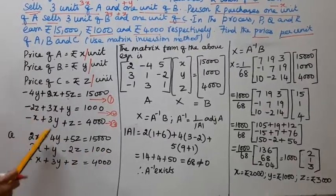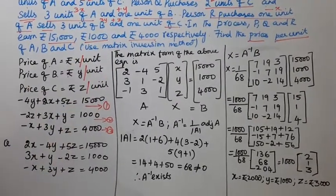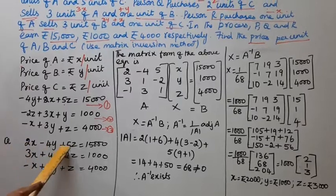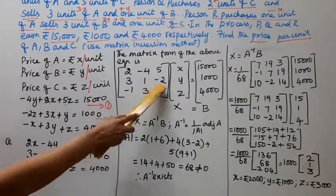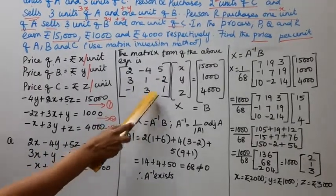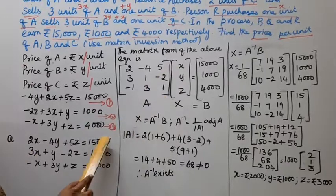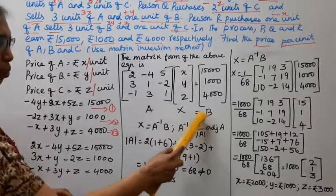The matrix form of the above equation. 2 minus 4, 5. 3, 1 minus 2. Minus 1, 3, 1. X, Y, Z. Right hand side of 15,000, 1000, 4000. AX equal to B. X equal to A inverse of B.